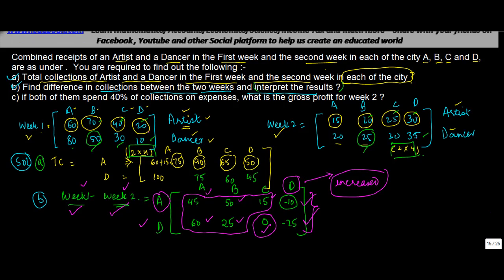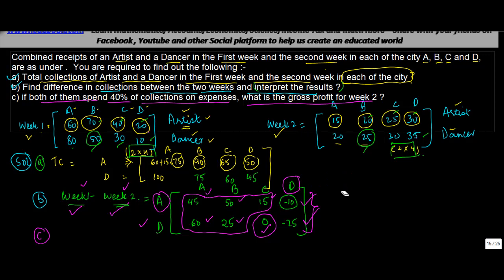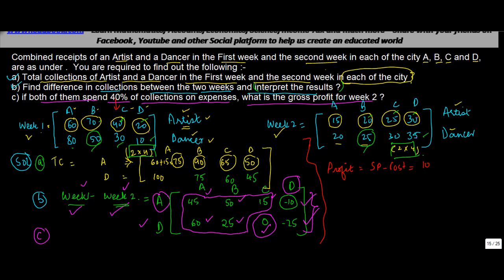Now for Part C: if both of them spend 40 percent of collections on expenses, what is the gross profit for week two? If 40 percent is expenses, then profit equals 100 minus 40, which is 60 percent, or 0.6 times the sales or collections.